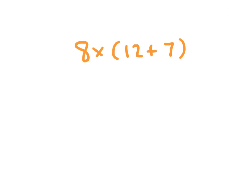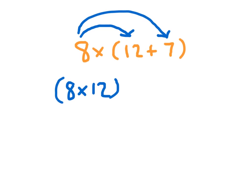Here we have 8 times 12 plus 7. And so we're going to distribute the 8 times, not only to the 12, but also to the 7. And showing that distributive property then, we're going to write this as 8 times 12 plus 8 times what? Right, 7.